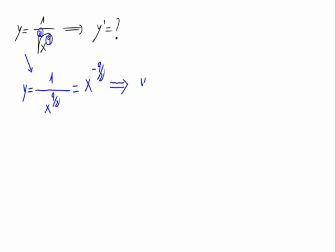So, its derivative would be, the minus 9 halves goes in front, times x raised to the power of minus 9 halves minus 1.